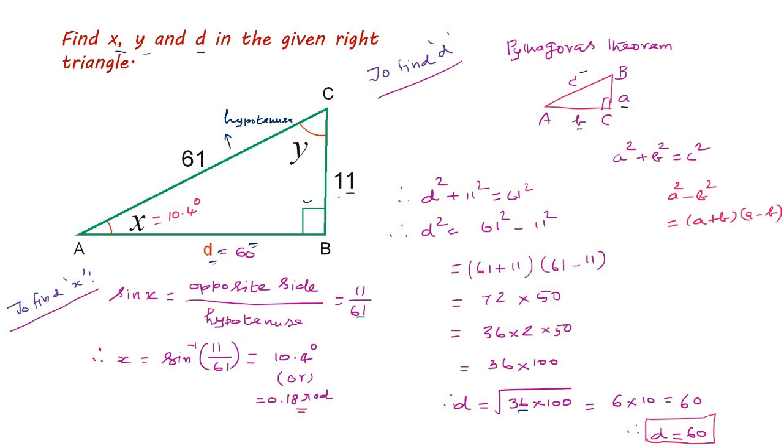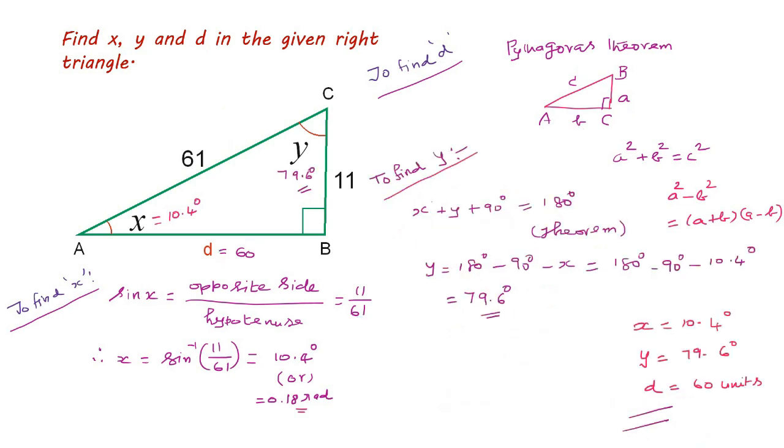Next, we have to find out angle y. To find y, we know the sum of all the three angles 180 degree. So, x plus y plus 90 degree is equal to 180 degree which is a theorem. You want to find y. Therefore, 180 minus 90 degree minus x is equal to 180 degree minus 90 degree. For x, you will put 10.4 degree. So, when you simplify this, you will get 79.6 degrees. So, y is equal to 79.6 degrees. So, this list gives you the set of solution: x is equal to 10.4 degrees, y is equal to 79.6 degrees, d is equal to 60 units.